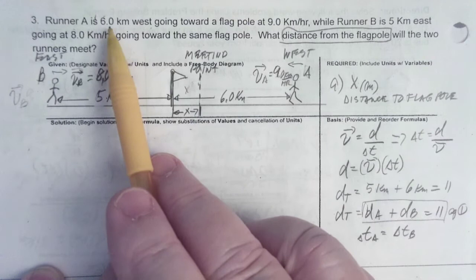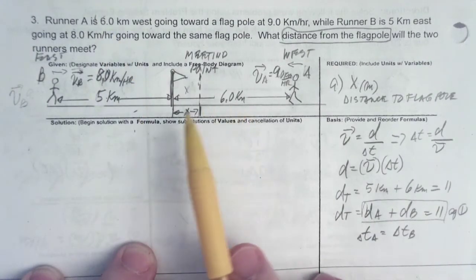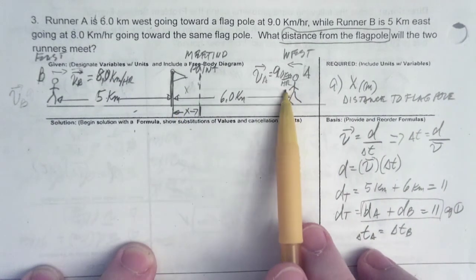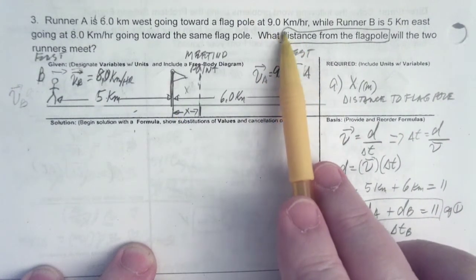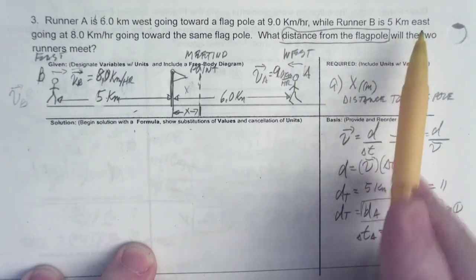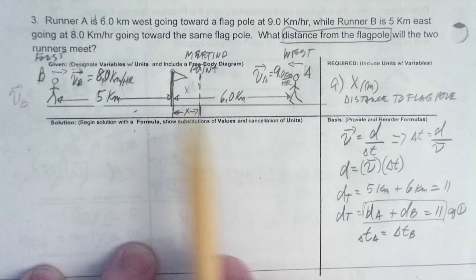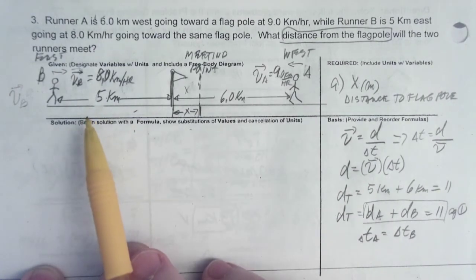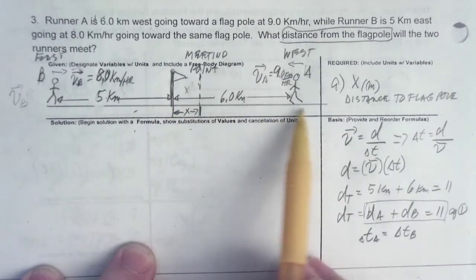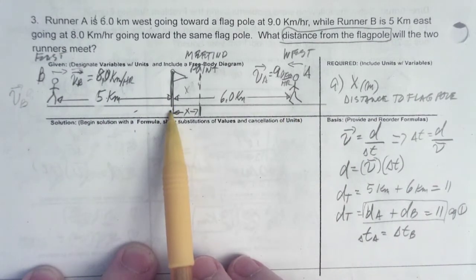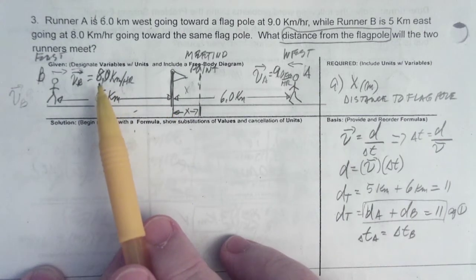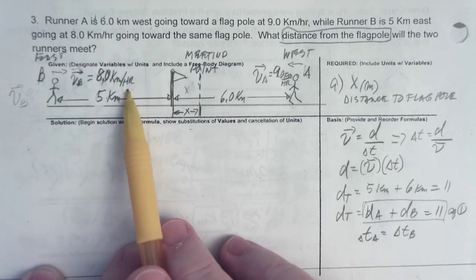And he will be running at 9.5 kilometers per hour. While runner B is going east, so here he's going this way. And he is five kilometers away from the flagpole. So the flagpole is in between runner A and B. And he is going to be traveling at 8 kilometers per hour.